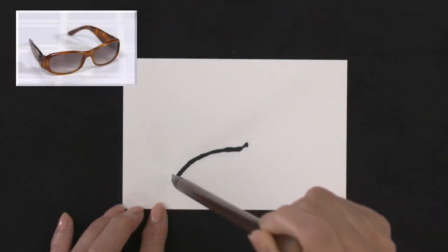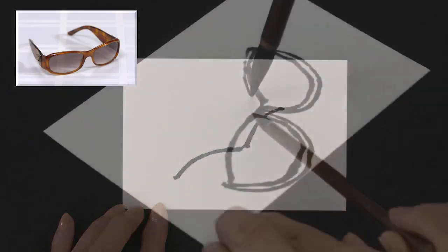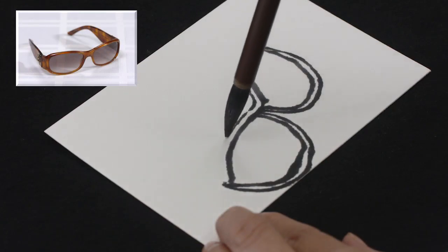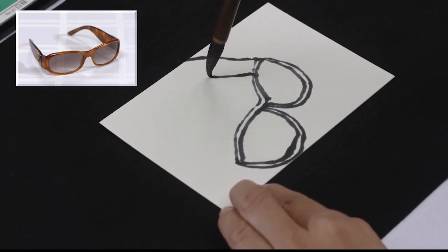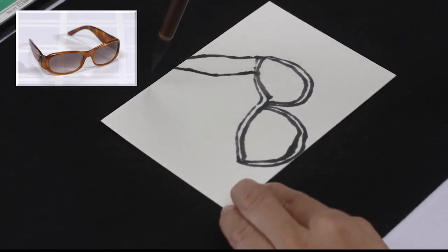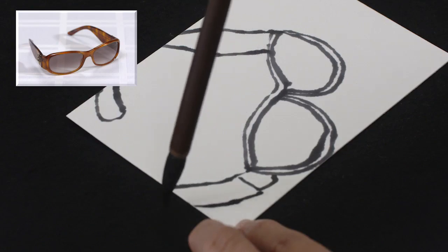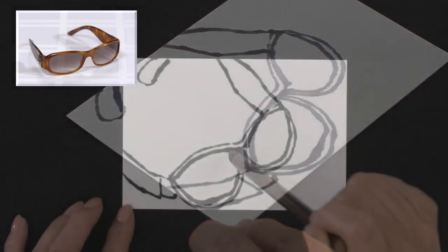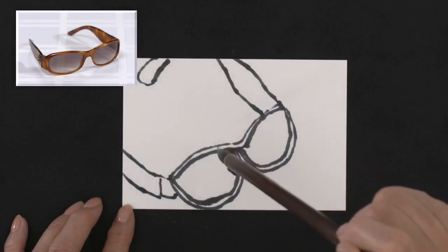Soak the ink brush with ink and start drawing from the center of the frames. Draw them from the left, then right. After drawing both frames, draw the left and right temples. Add the nose pad and patterns as well.